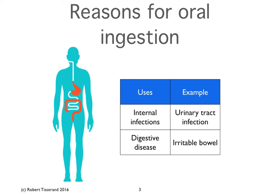For treating irritable bowel disease specifically, you would have to use enterically coated capsules. There are several brands of peppermint oil, for example, that are sold in enterically coated capsules for this reason, because this prevents the capsules from dissolving in the stomach. If you don't have enterically coated capsules, the essential oil actually won't reach the bowel at all, as we have just seen.